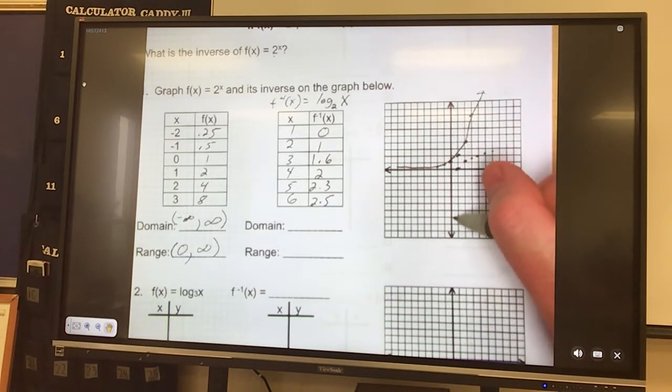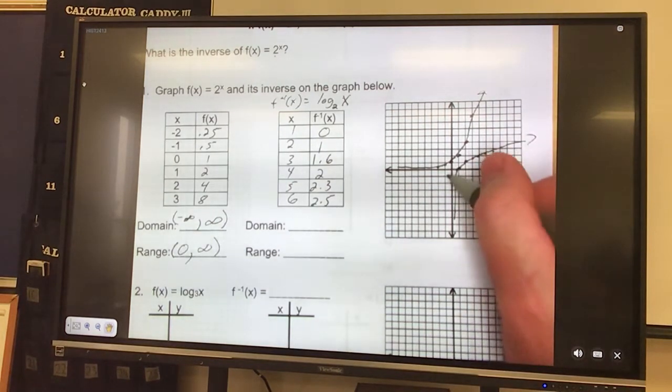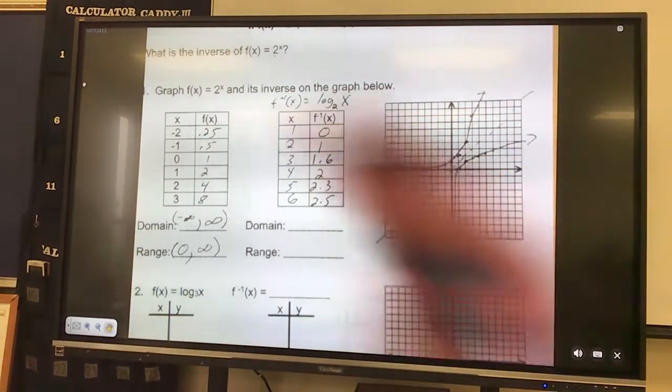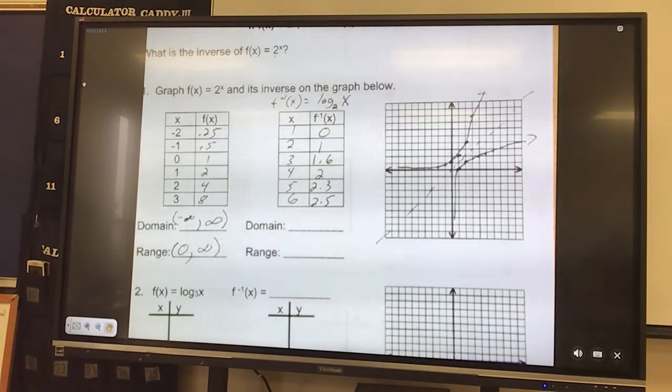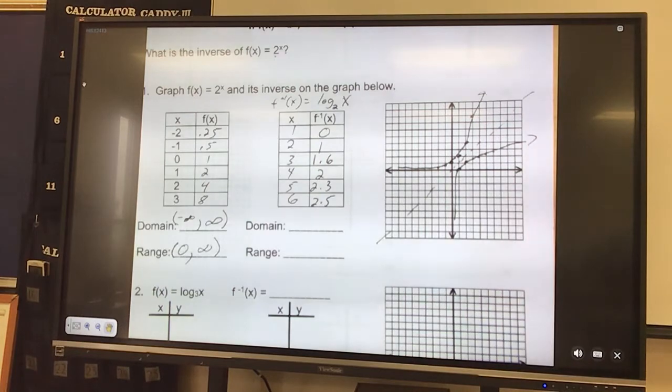So this guy would look like this. It's going to snuggle up next to the y-axis but not actually touch it. And it takes off from there. And I can see if I were to graph y equals x, that they would be reflected over on top of one another. So that shows it's an inverse.